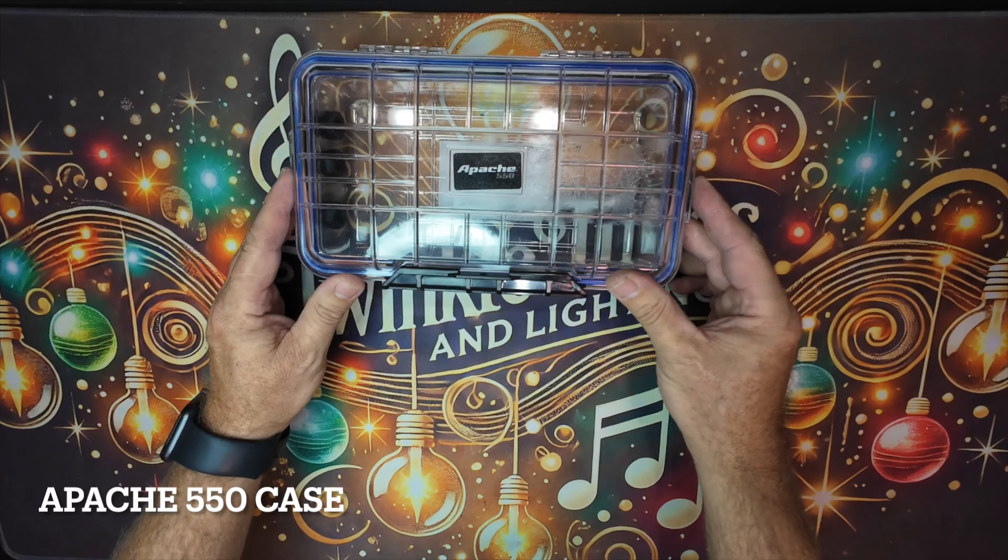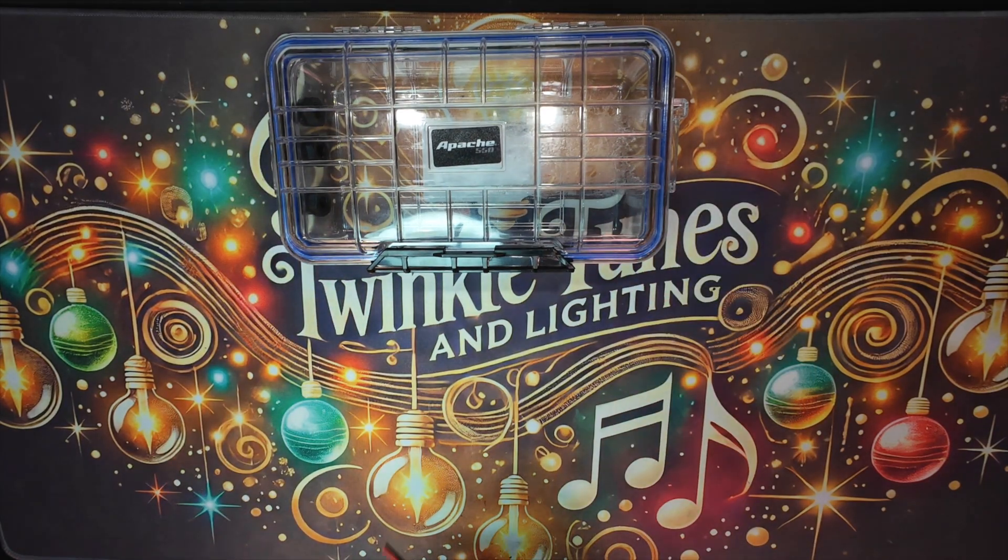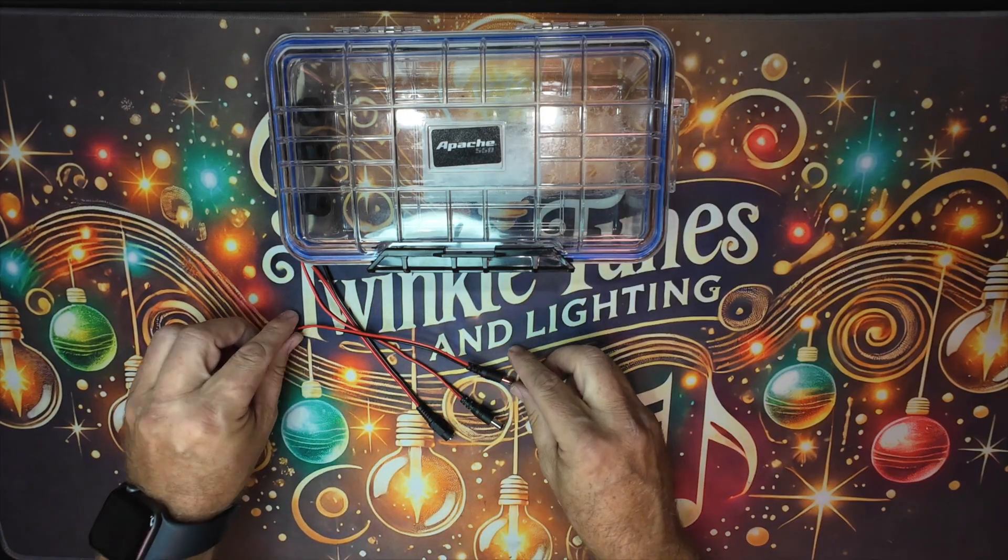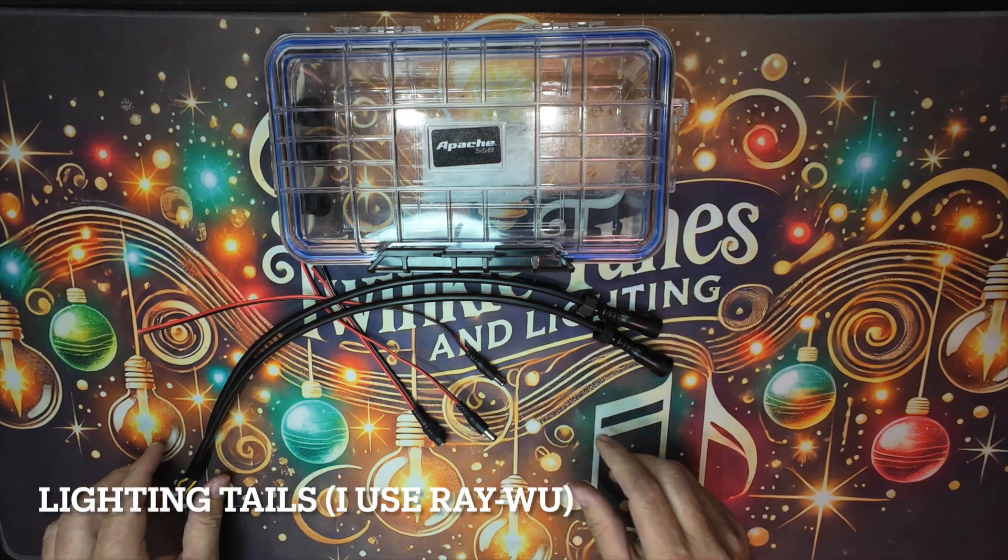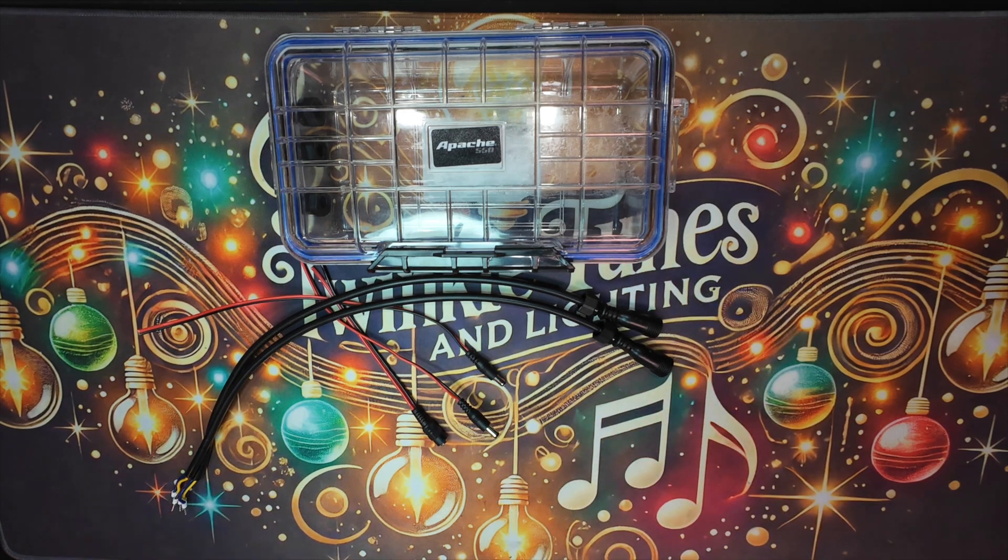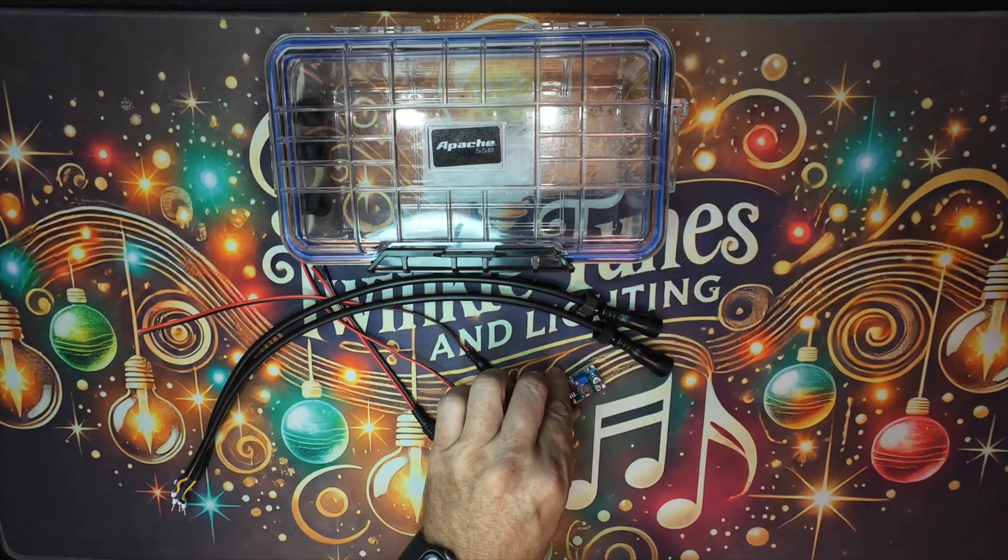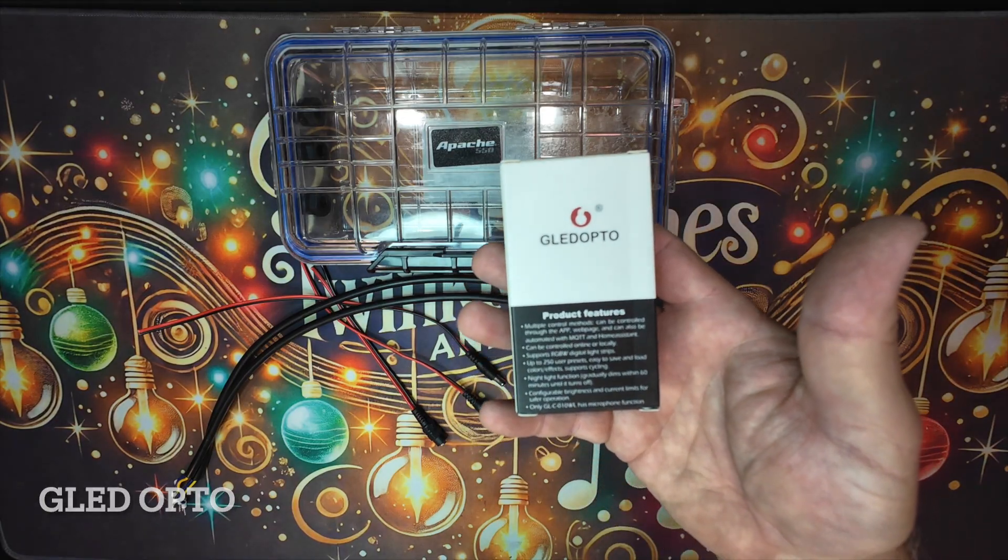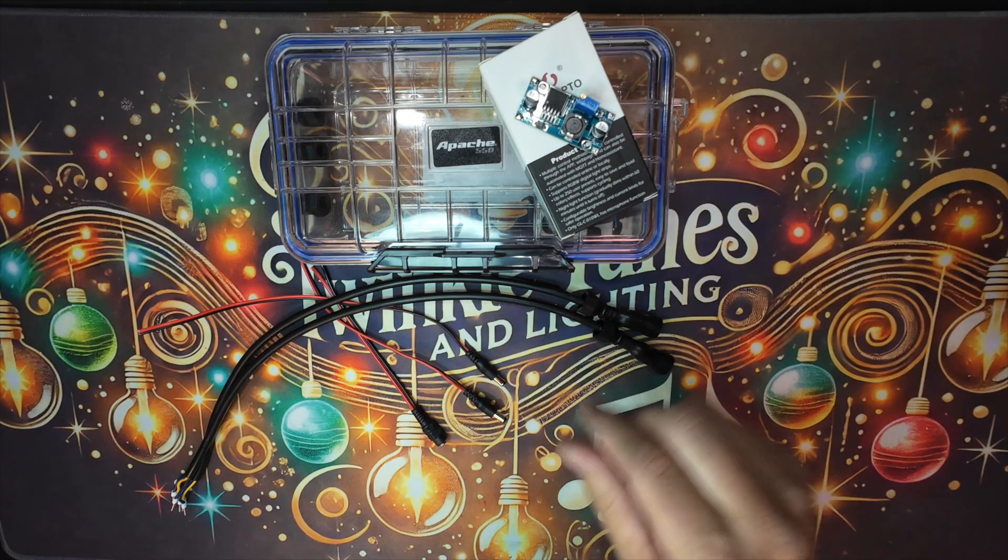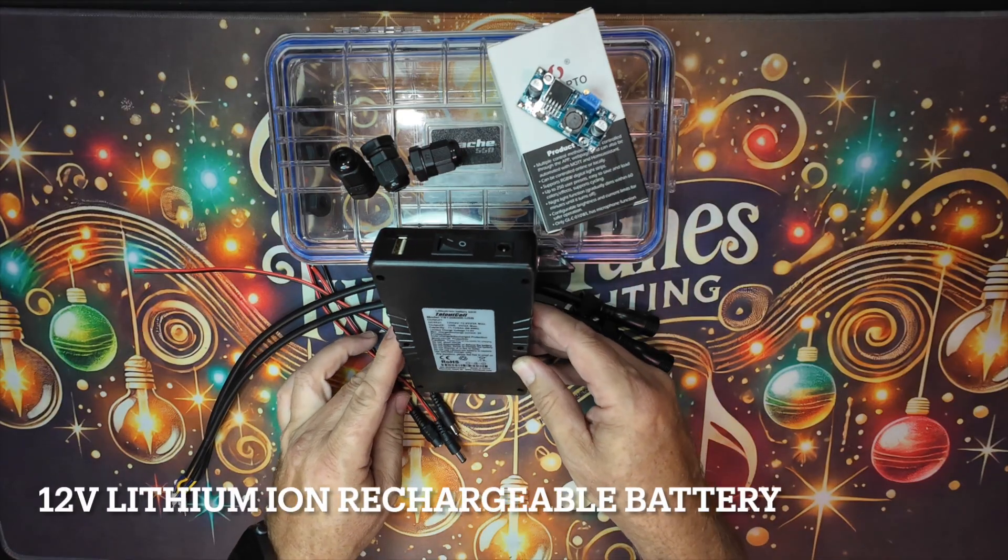Here's a list of materials: an Apache 550 case, 12 volt DC pigtails - two females and one male, lighting tails (I use the Ray Wu), a buck converter (that's only if you're making the 5 volt version), a GLEDOPTO, three PG-7 glands, and a 12 volt lithium-ion rechargeable battery.